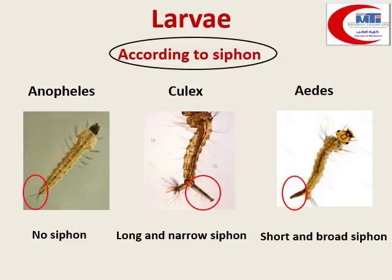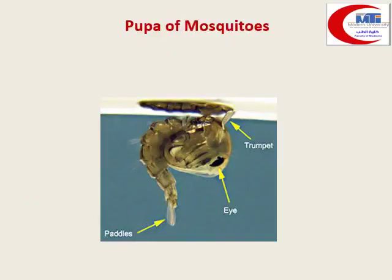The pupa has a respiratory trumpet for breathing. It is not required to differentiate which mosquito species the pupa belongs to. We have now finished the mosquitoes section — the most important skill is identification of the mouthparts.